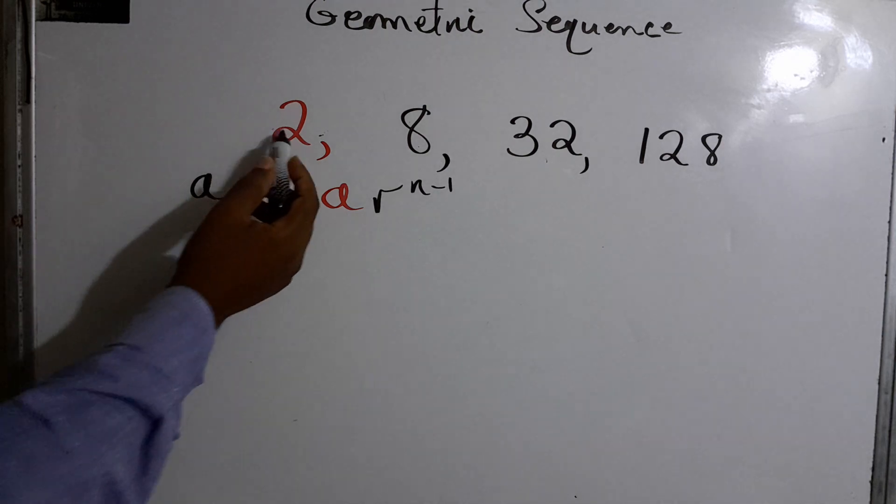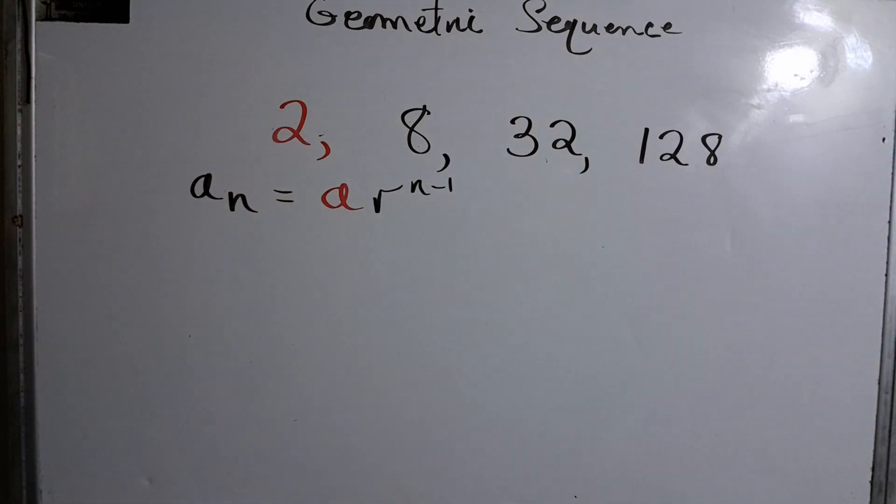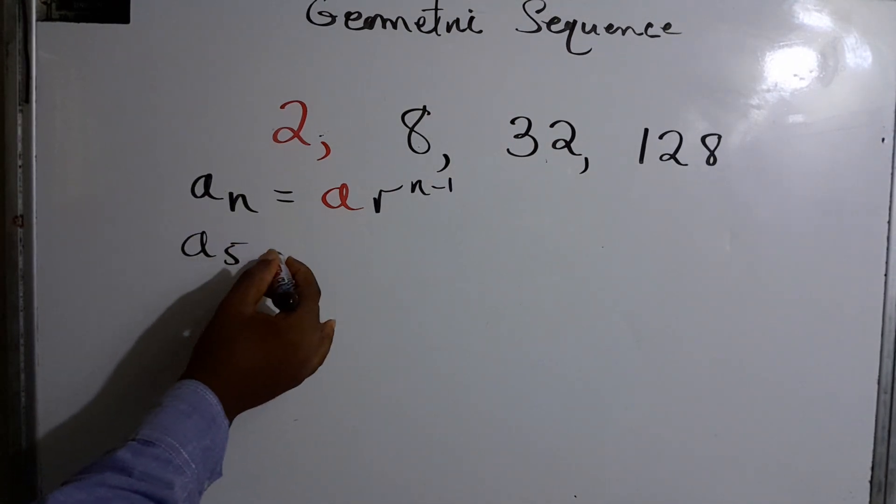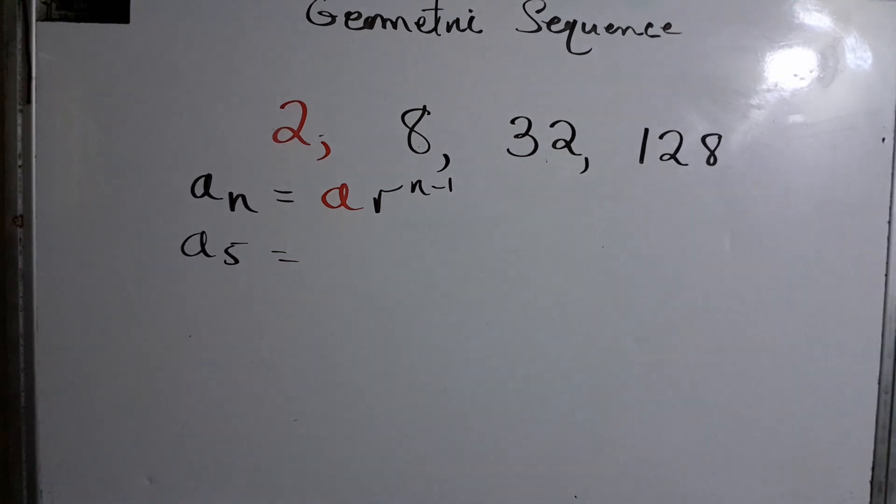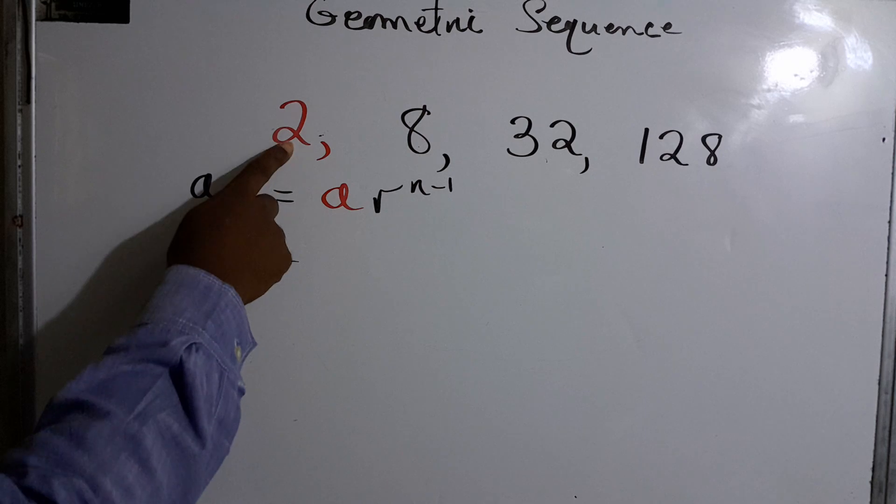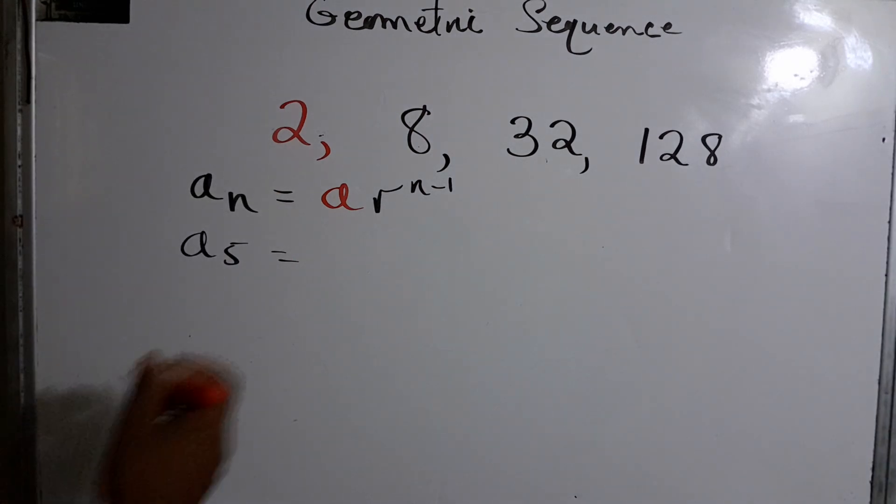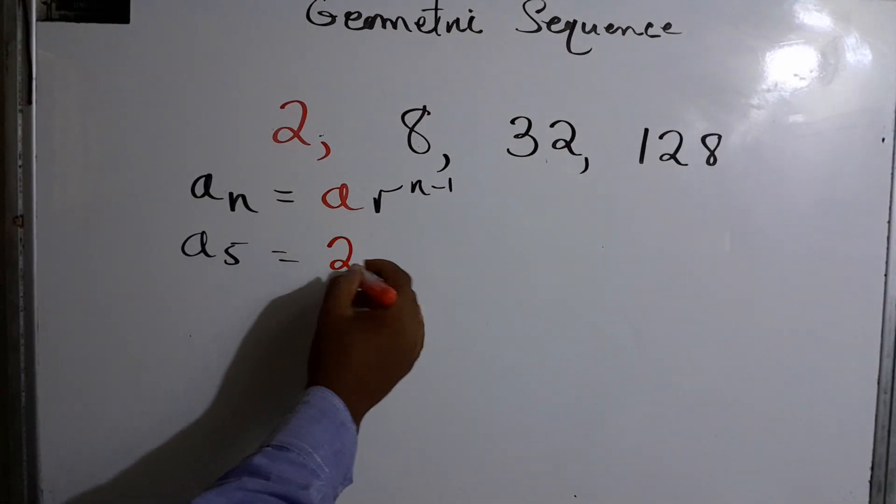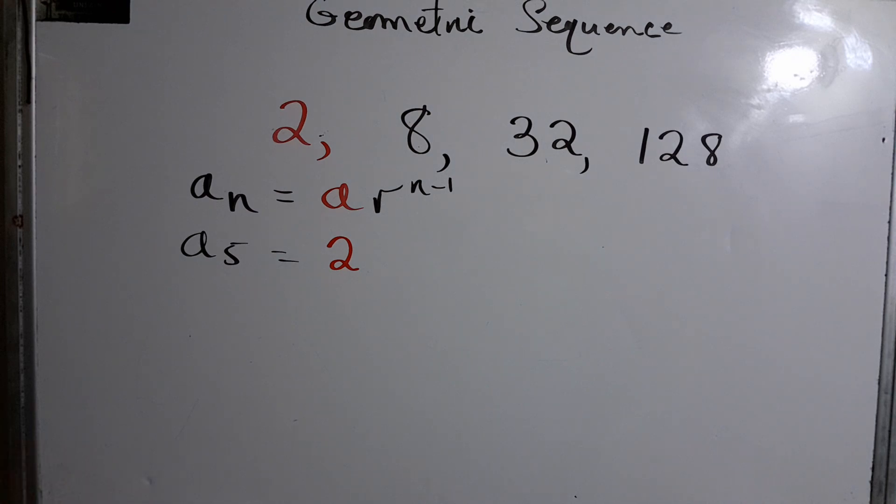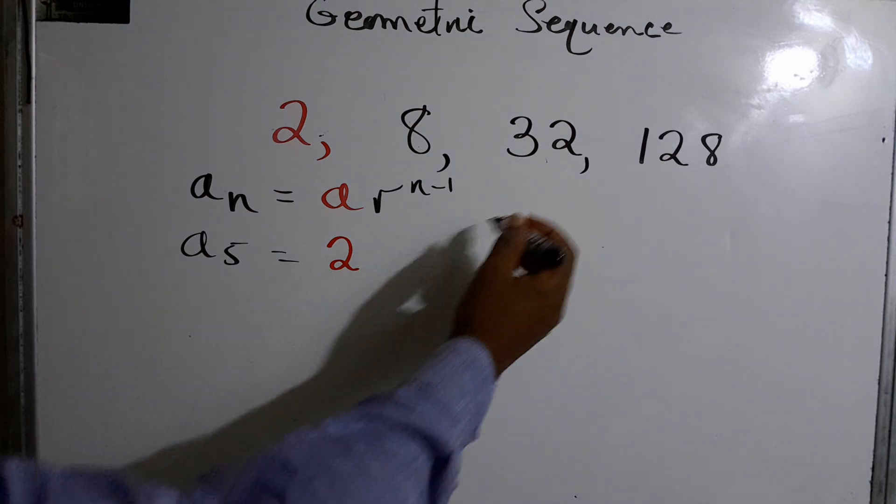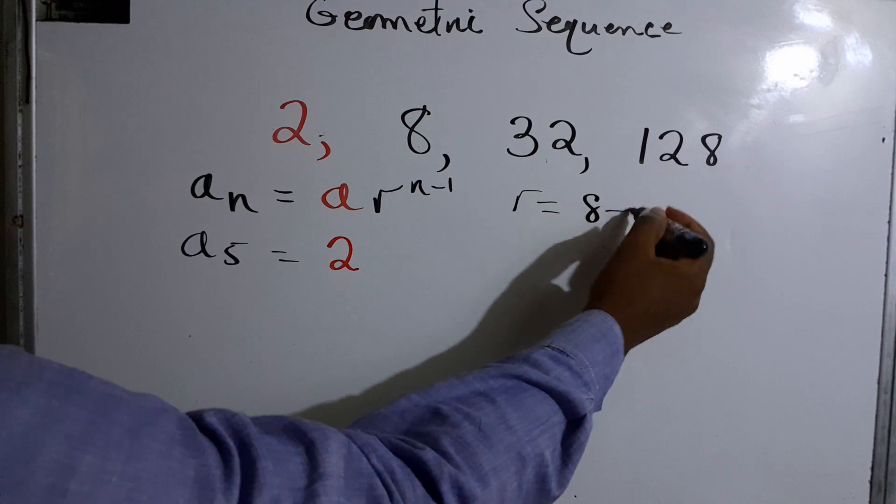Here we have one, two, three, four. Let us see we are asked to find the fifth term. So we write a to the fifth because it's the fifth term. Now we basically have a, which is our starting point, so that would be two. R, let's find the common ratio.